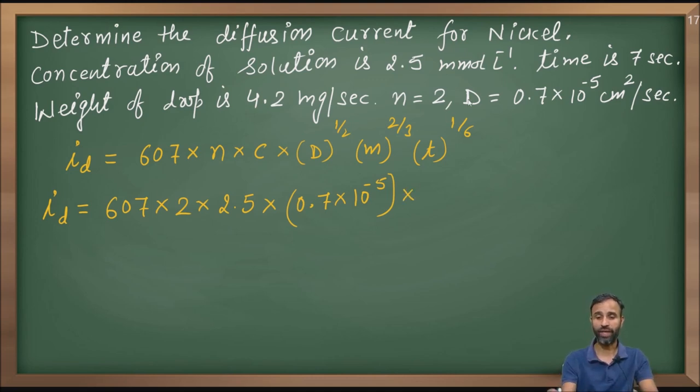M in milligram per second, that is 4.2 raised to power 2 by 3, and time t in seconds, drop time, that is 7 seconds raised to power 1 by 6. All are given in the units required for the equation.